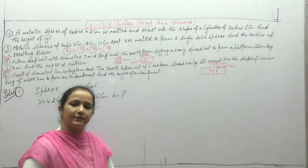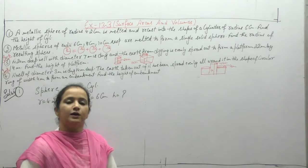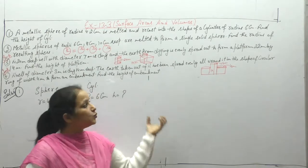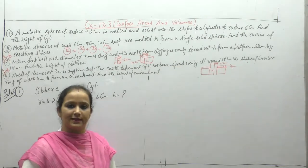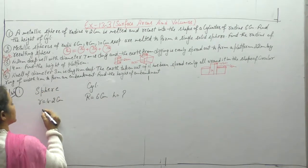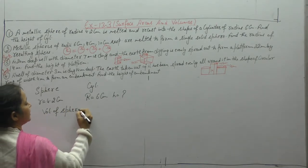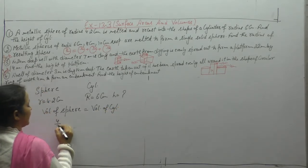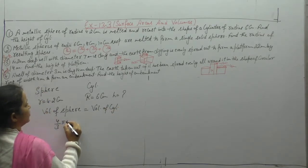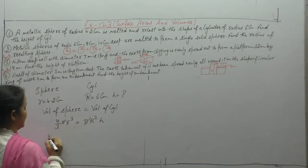If the sphere is melted and recast from the same material into the shape of a cylinder, the volume will remain the same. So volume of sphere equals volume of cylinder: (4/3)πr³ = πr²h. π cancels from both sides.